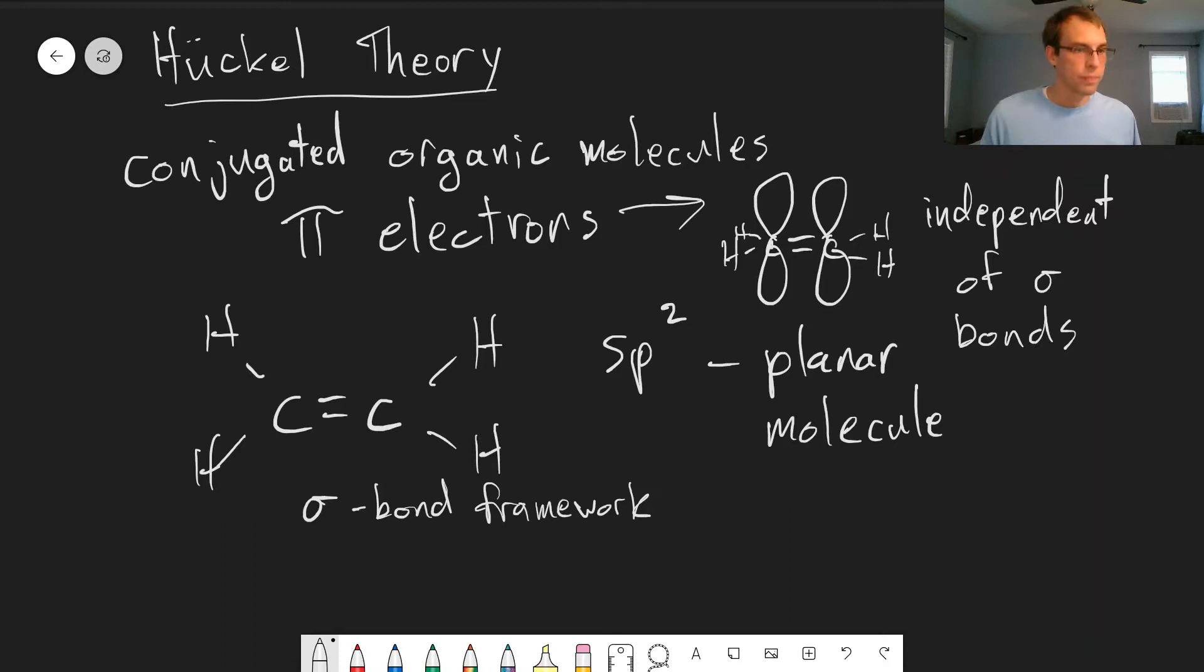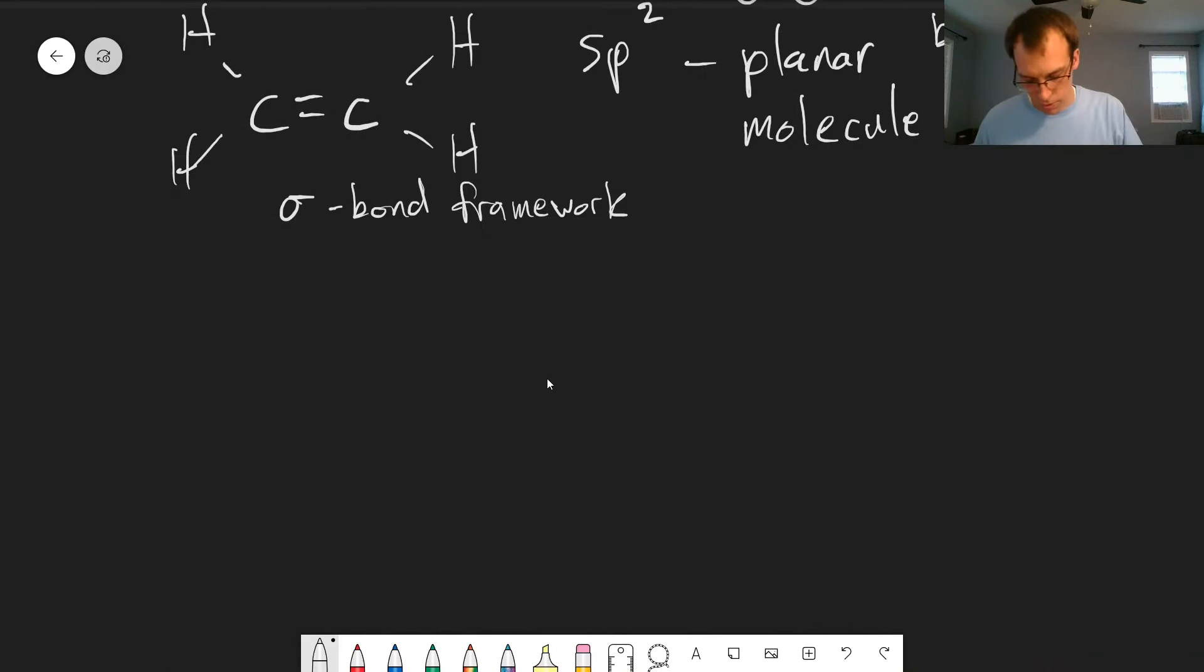So we're looking at just the pi electrons, just these p orbitals that are not part of the sigma bond framework, that are not part of the hybridization. And we treat these independent of the sigma bonds. And so the question is, how will these p orbitals interact? We'll have positive and negative lobes. And we'll do what we've done in so many other instances. We'll take our atomic orbitals and form linear combinations. And this forms our trial function that we can use in a variational theory approach.